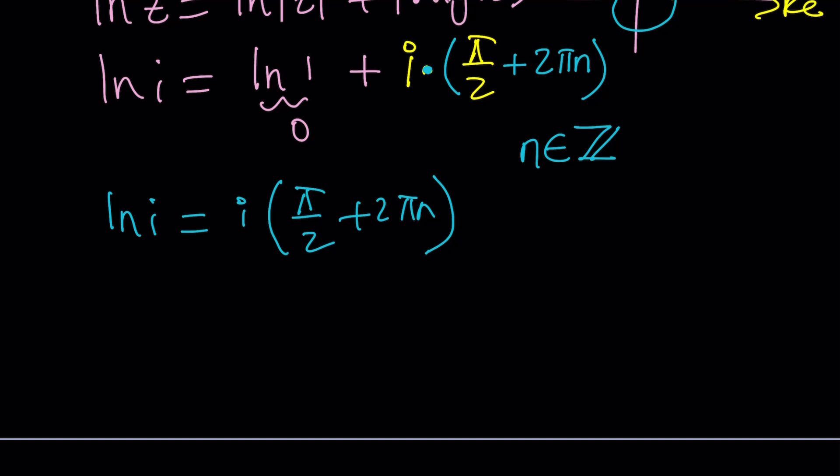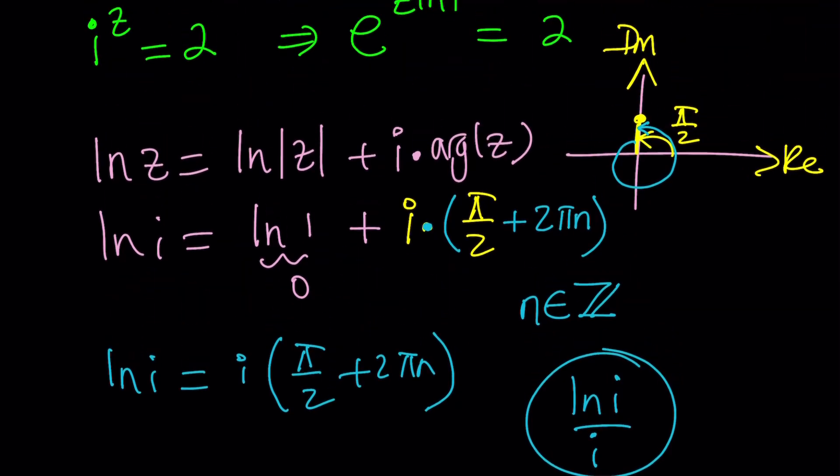By the way, notice that natural log of i is divisible by i. I don't know if that makes sense. In other words, ln i over i is real. Isn't that interesting? Like, an imaginary divided by another imaginary makes a real. Okay. Really, that's true. So now, we're going to go ahead and plug that in, e to the power Z ln i. But before we do that, let's go ahead and write the 2 as an exponential.